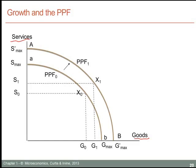So, if before the spurt in economic growth took place, we were operating at an output defined by x0 — producing a goods level g0 and a services level s0 — the fact that we have economic growth and therefore a growth in the capacity of the economy means it is possible to produce more of one or perhaps both goods. If the economy was originally at point x0 and now decides after the spurt in economic growth to produce at the combination given by x1, we can see that more goods and more services are capable of being produced after economic growth, just as we would anticipate.